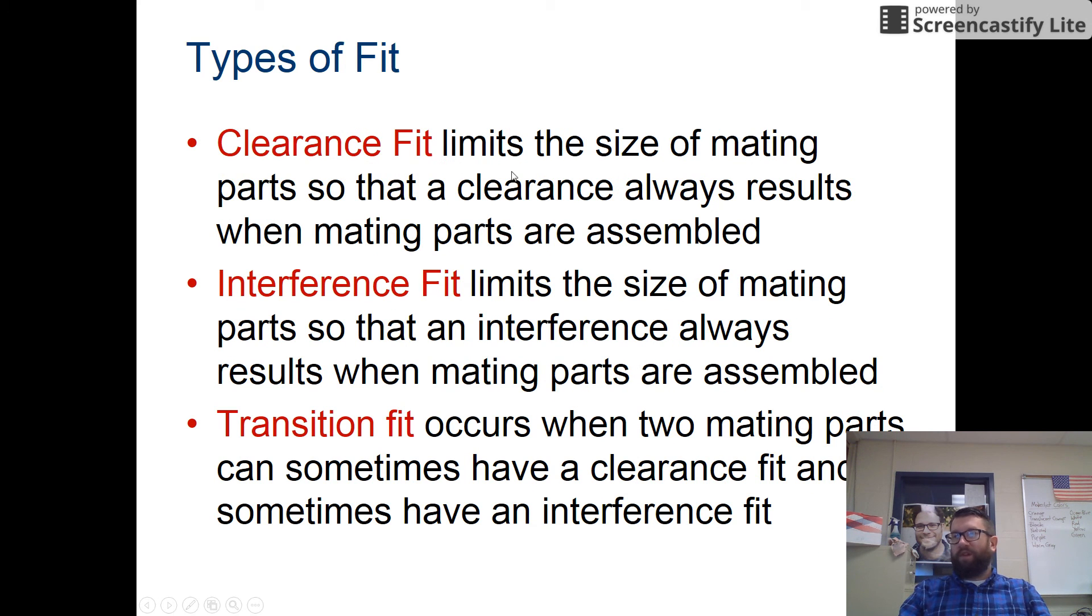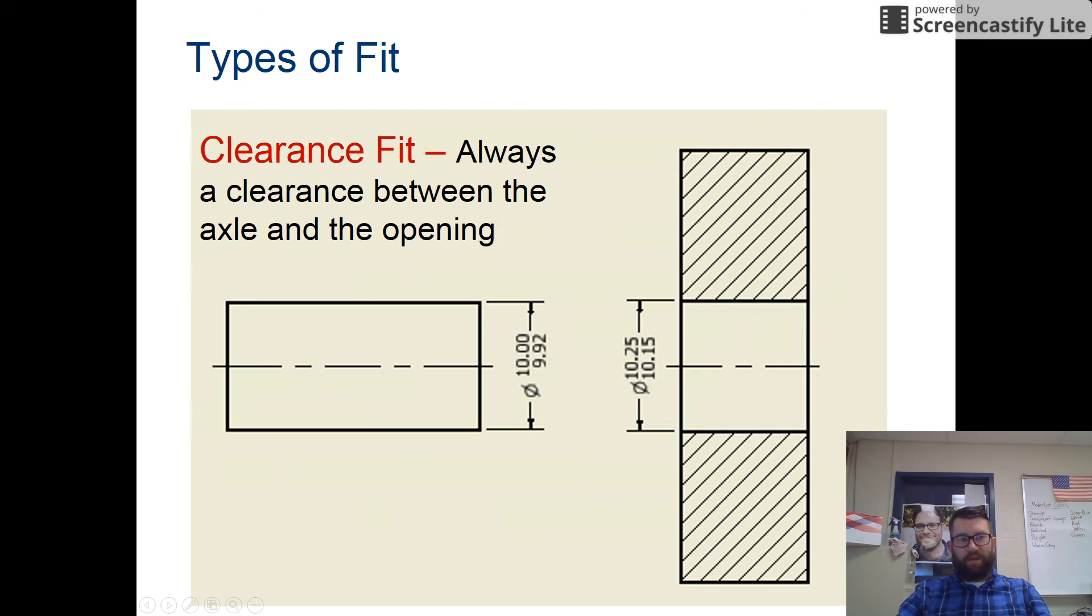Types of fit. You have a clearance fit, limits the size of mating parts so the clearance always results when mating parts are assembled. Typically, this is a peg inside a hole. Interference fit limits the size so that an interference results when mating parts are assembled. And then you have a transition fit where two mating parts can sometimes have a clearance fit or sometimes have an interference. Clearance fit, always between the axle and an opening.